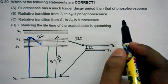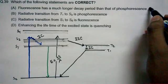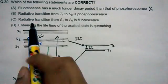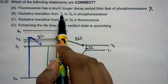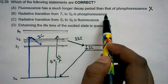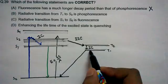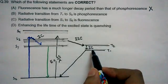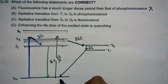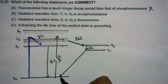So phosphorescence has longer decay period, so this option is incorrect. And radiative transition from T1 to S0 is actually phosphorescence. Yeah, you can see that radiative relaxation from triplet state to its ground state is called phosphorescence.